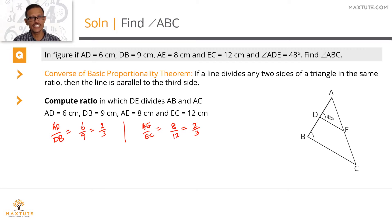The ratio in which DE divides AB and AC is equal which essentially translates to the fact that DE is parallel to BC. If DE is parallel to BC, angle ADE will be equal to angle ABC which will be equal to 48 degrees. So the measure of angle ABC is 48 degrees.